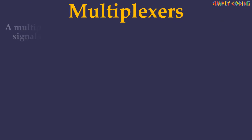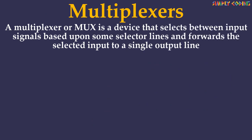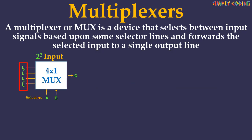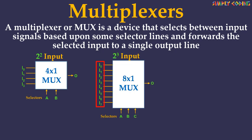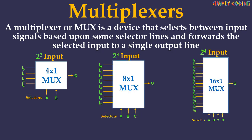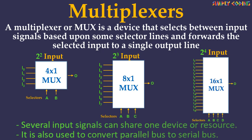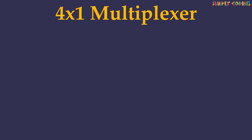Now let's take a look at multiplexers. A multiplexer or MUX is a device that selects between input signals based upon some selector lines and forwards the selected input to a single output line. A multiplexer of 2 raised to the power n inputs has n select lines, which are used to select which input line to send to the output. So if there are 4 input lines it needs 2 selector lines, if there are 8 input lines it needs 3 selector lines, and if there are 16 input lines it needs 4 selector lines. Multiplexers make it possible for several input signals to share one device or resource. They are also used to convert parallel bus to serial bus. We will first take a look at the 4-to-1 multiplexer.